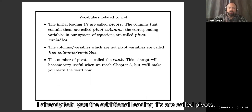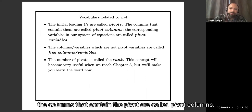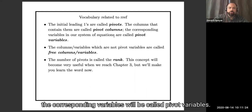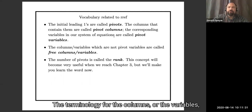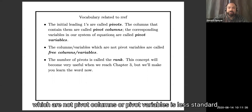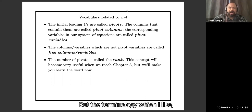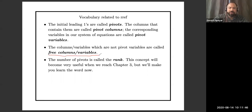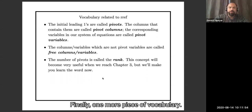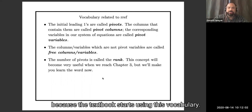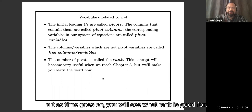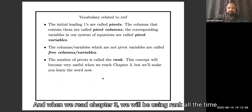Some vocabulary: the leading ones are called pivots. The columns that contain them are pivot columns. When we have a system of equations, the corresponding variables are called pivot variables. The terminology for columns or variables that are not pivot columns or pivot variables is less standard, but the term I like is free columns or free variables — in the next talk you'll see in what sense they are free. The number of pivots is called the rank. As time goes on you'll see what rank is good for, and when we reach chapter three we'll be using rank all the time.